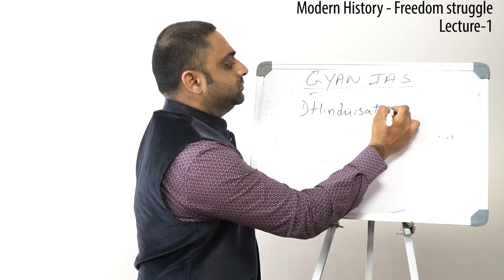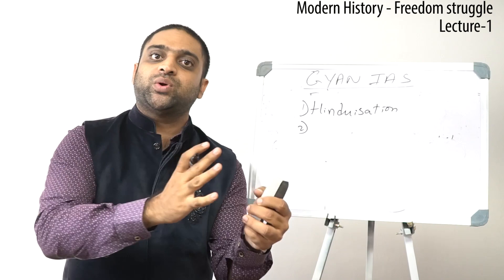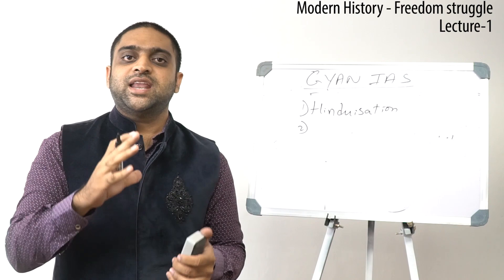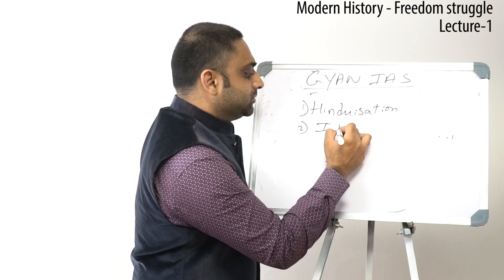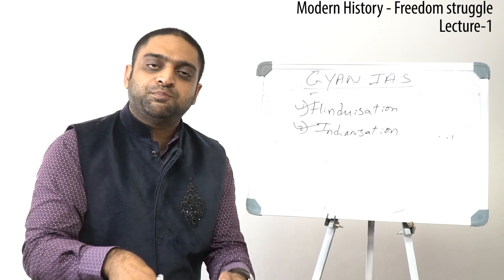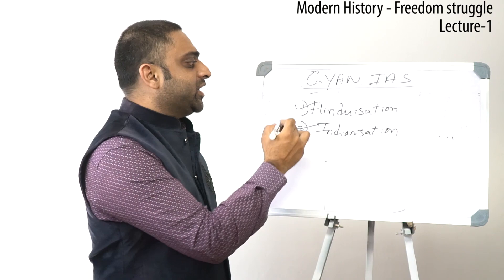The second process: these invaders who came into India during the ancient period came here and accepted India as their motherland. They came with all their belongings and never looked back at their original land. This can be called Indianization. Hence, due to Hinduization and Indianization, these rulers looked at the indigenous people as their own people and exploitation did not take place. That is the reason freedom struggle did not happen during the ancient era.